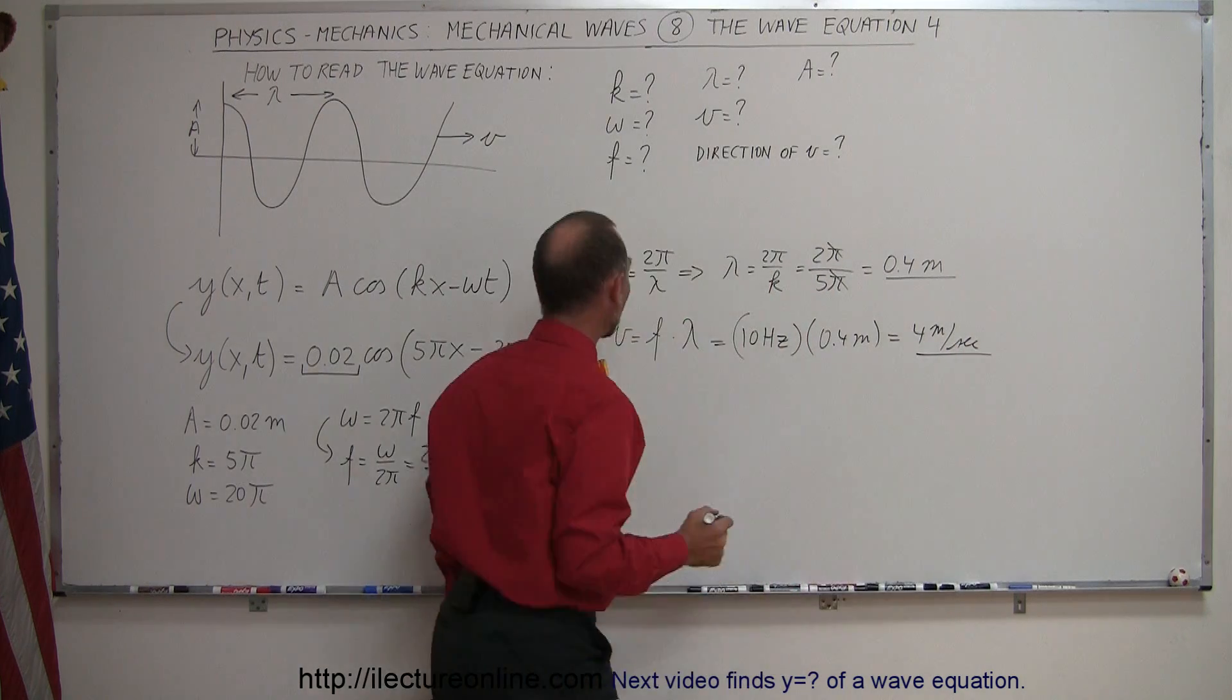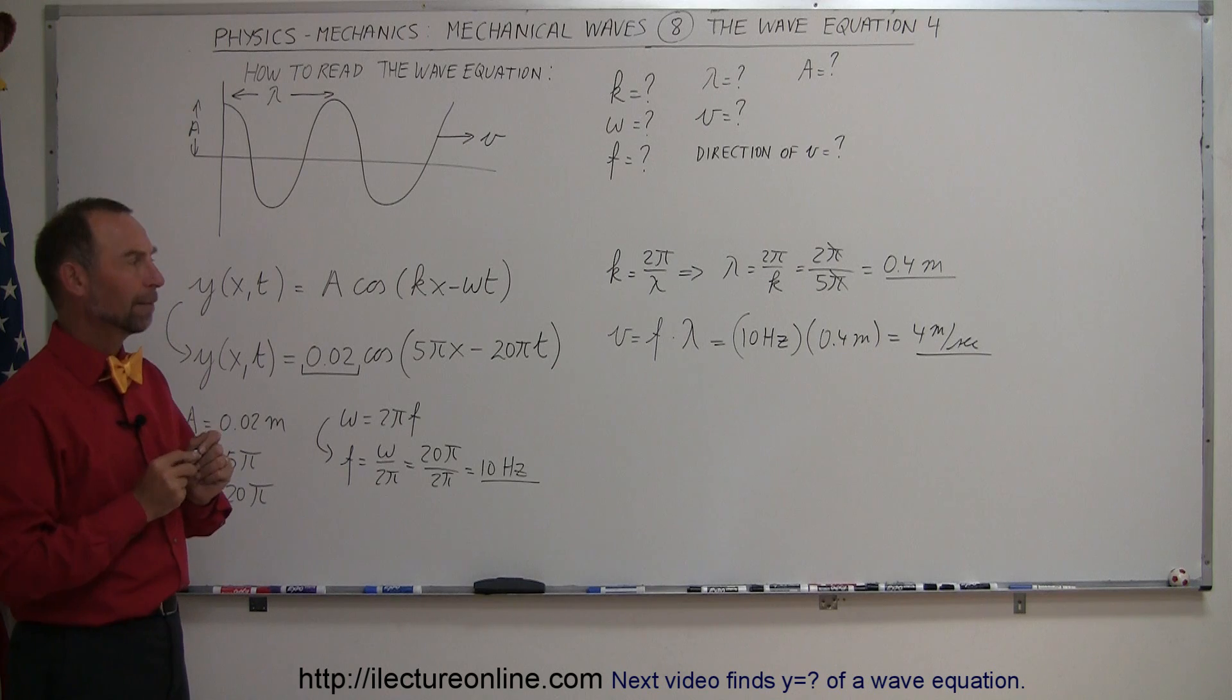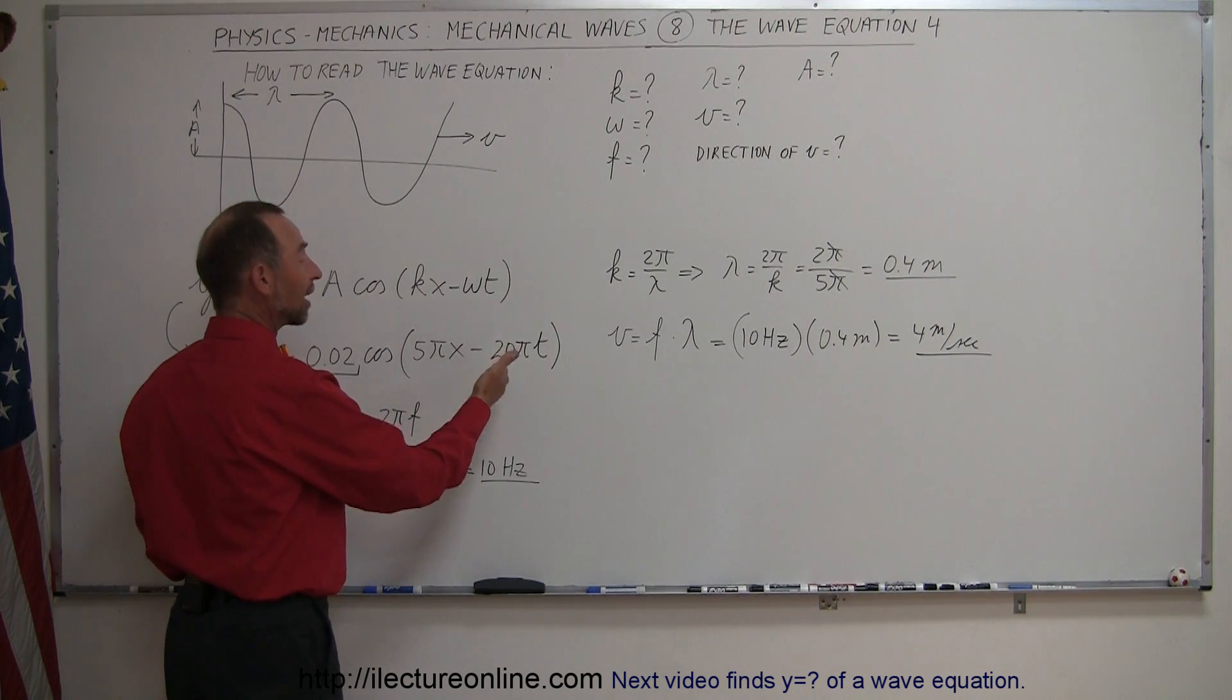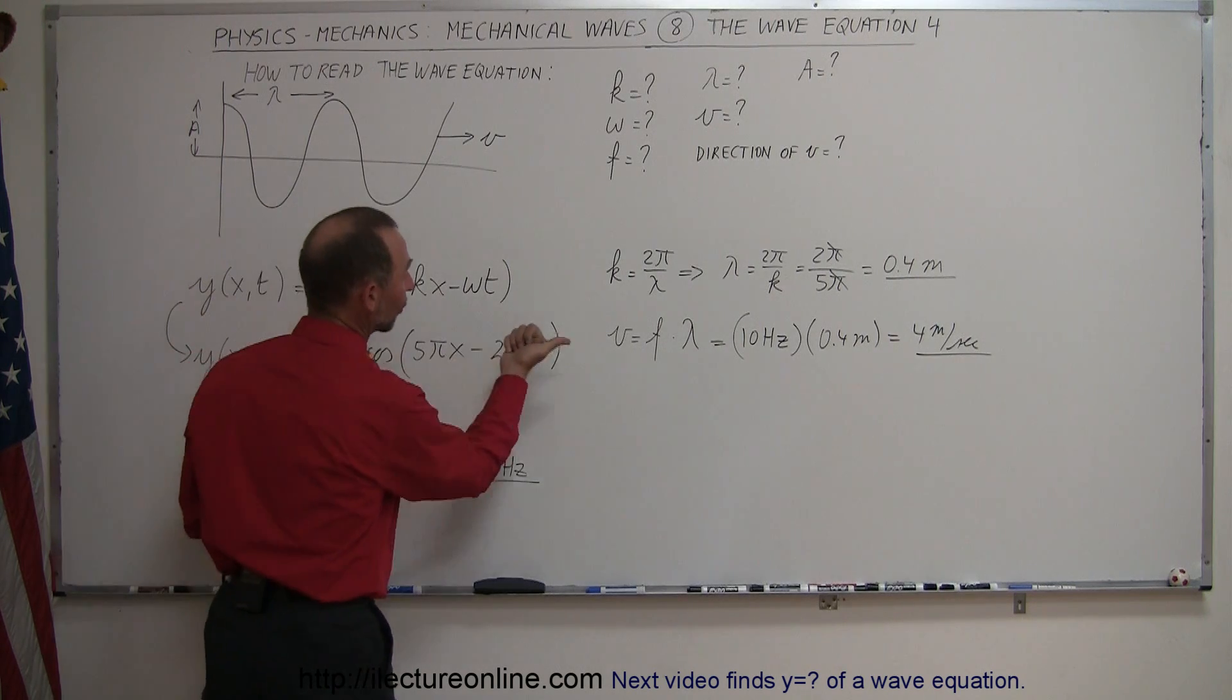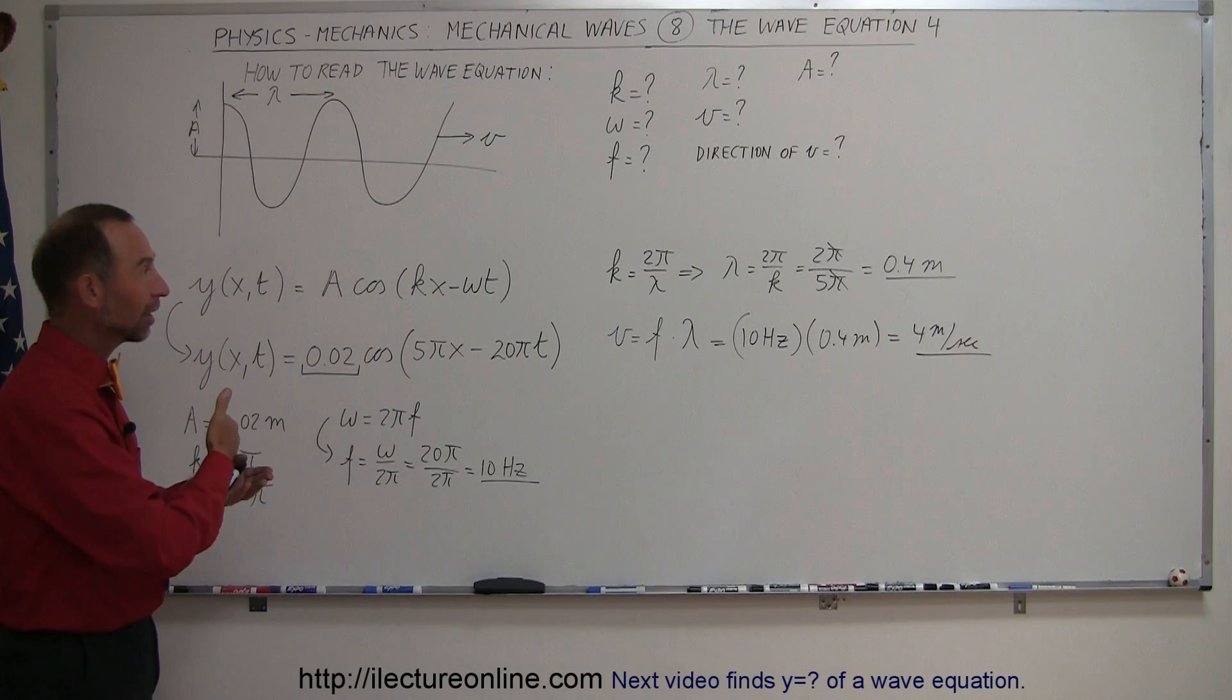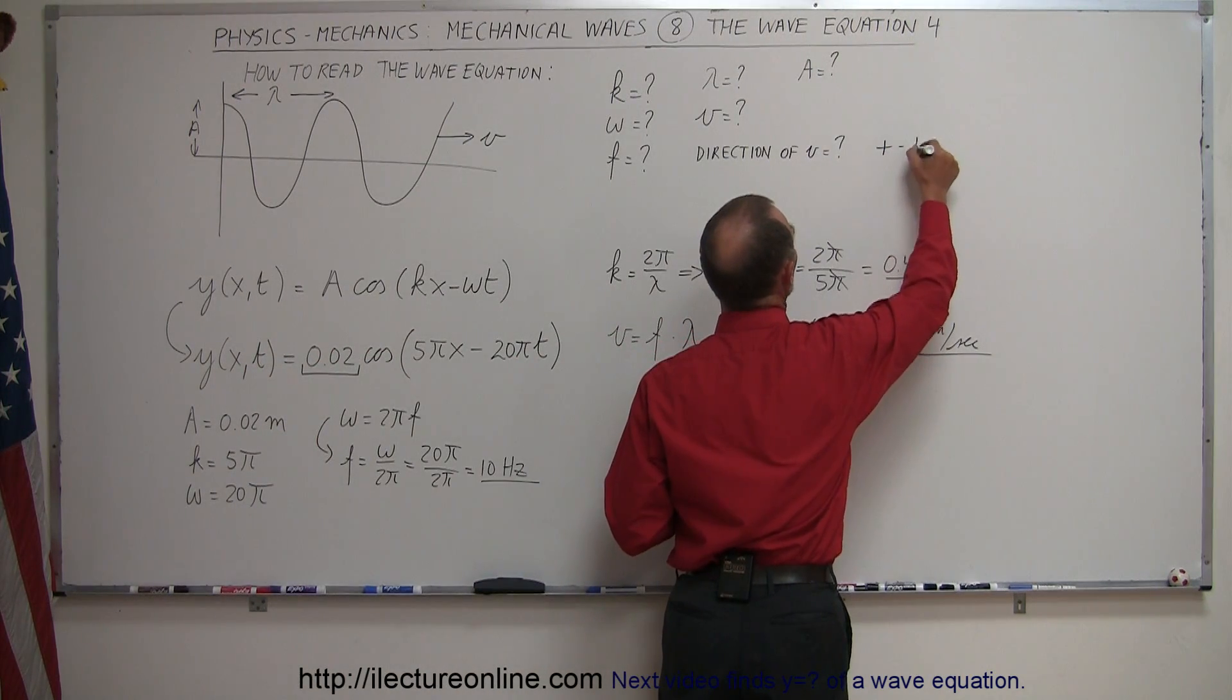So now we also found the velocity. Now, what is the direction of the velocity? Well, that depends upon the equation. If this is a negative sign, that means that the phase angle is subtracted, that means the velocity is to the right. If this is a positive sign, then the velocity will be to the left. So in this case, the velocity is going to be the positive direction.